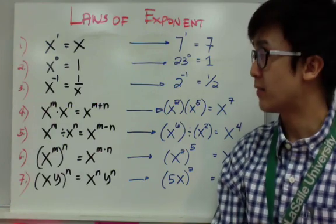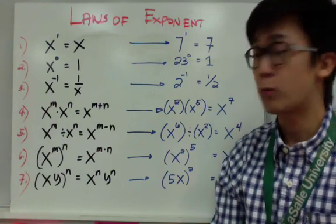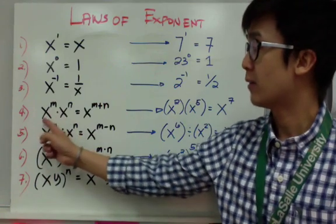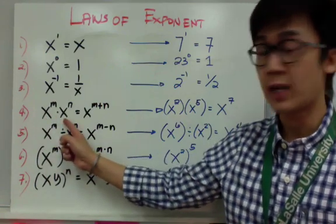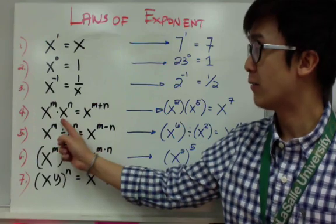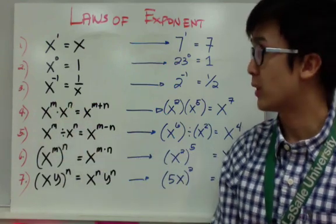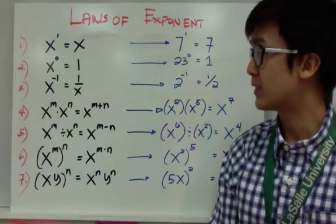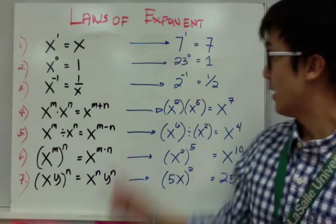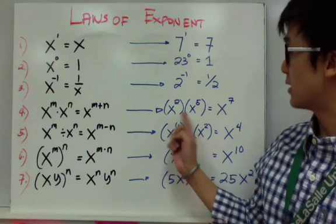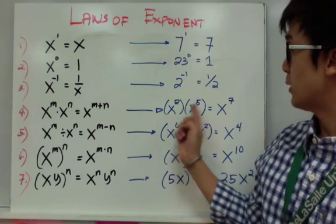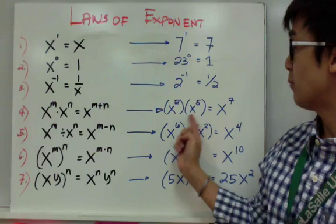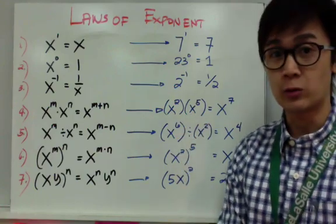In multiplying exponents, this is one of the important things you need to understand. When you are multiplying two expressions with the same variable, all you have to do is add their exponents. So x to the m times x to the n is simply x to the m plus n. That's why if I have x squared times x to the fifth, 2 plus 5 is 7, so the expression simplifies to x raised to 7.